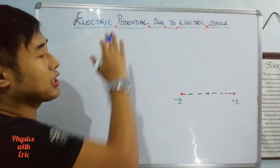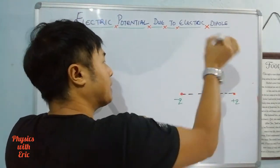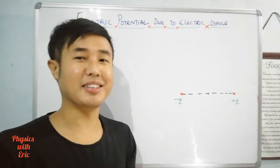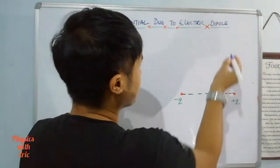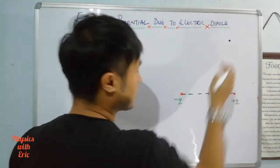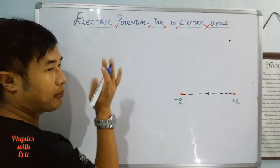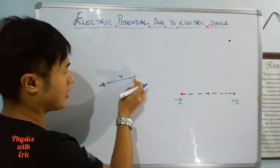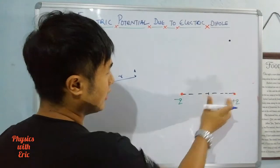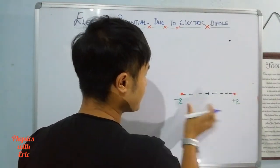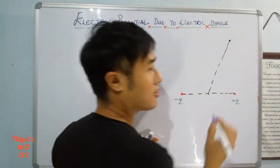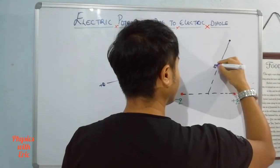Now I'm going to talk about electric dipole potential at a point. We need to find the electric potential at point P, which is at distance r from the center of the dipole. We consider the distance from each of the two charges separately.